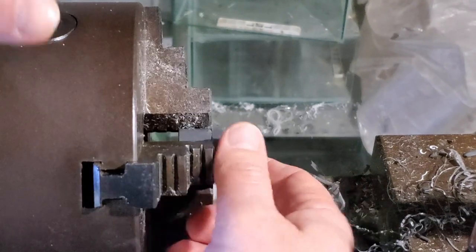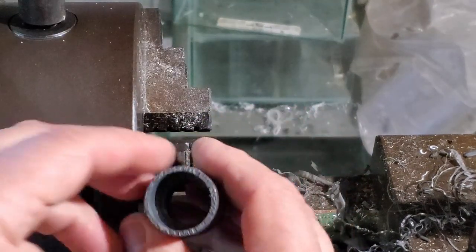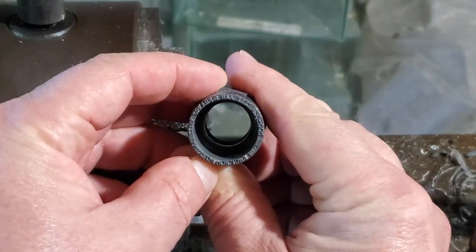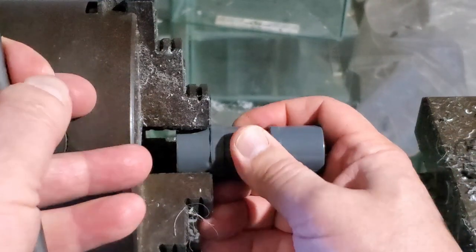Schedule 40, which is the standard grade, takes 400 pounds per square inch to risk blowout, and this is obviously way stronger than that. It's way stronger than I need it to be, but it's a piece of pipe I had around.